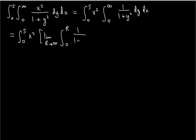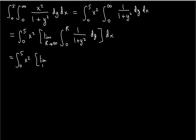So we have one over one plus y squared dy, close bracket, dx — this whole thing is part of the dx integral. Taking care of the inner integral first, this equals from zero to five, x squared, times the limit as r approaches infinity of arctan(y) evaluated from zero to r, dx. The antiderivative of one over one plus y squared is arctan(y).